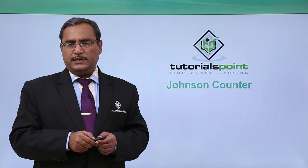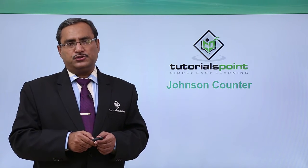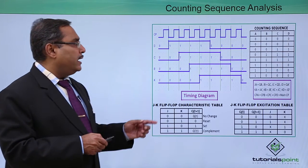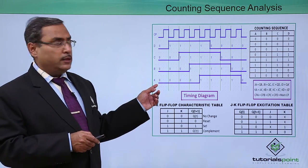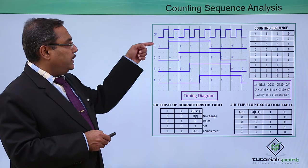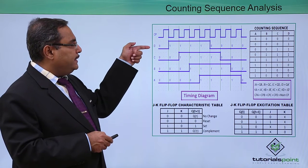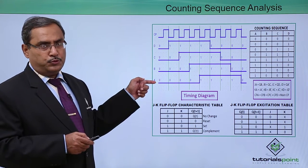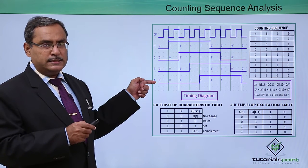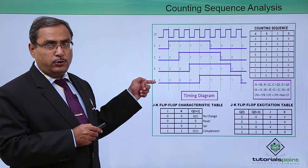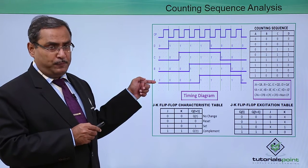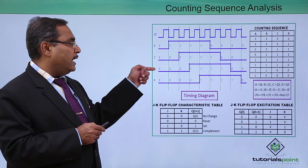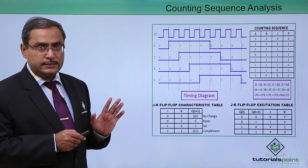Why this name has been given to this Johnson counter? Here is the timing diagram of the Johnson counter. Here this is my clock pulse; D, C, B, A are the outputs. That means in this particular case I require 4 flip-flops to implement this Johnson counter, as I am requiring 4 output lines.